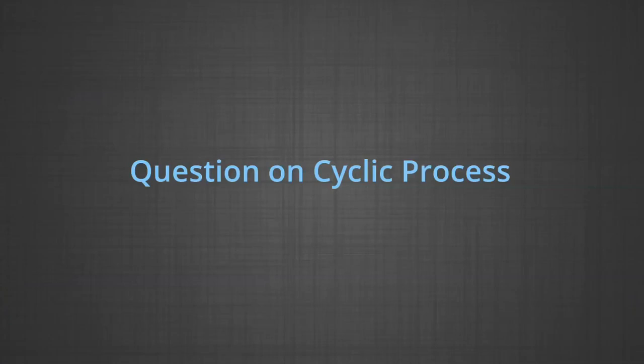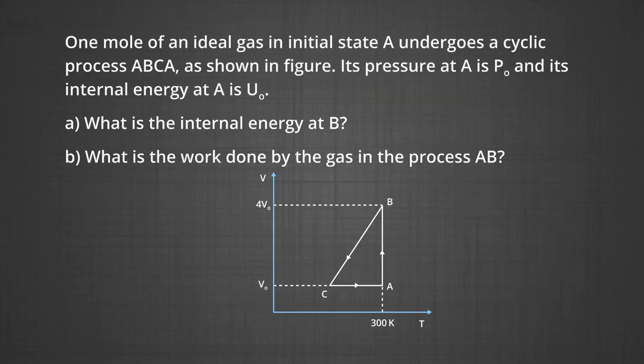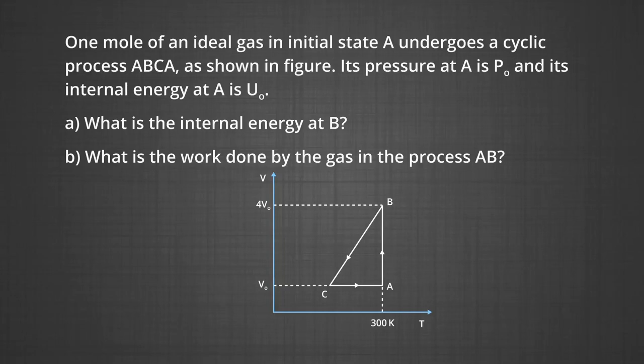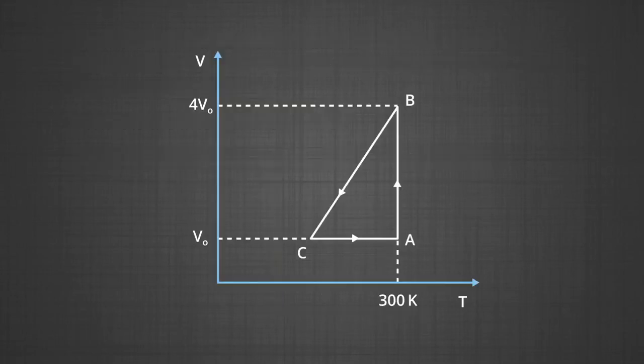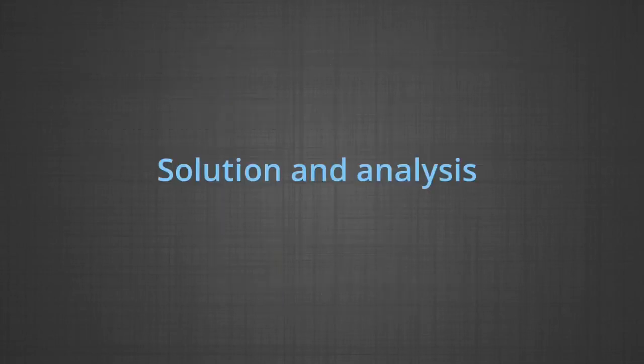The next question is based on cyclic process. One mole of an ideal gas in initial state A undergoes a cyclic process A→B→C→A as shown in the figure. Its pressure at A is P₀ and its internal energy at A is U₀. What is the internal energy at B, and what is the work done by the gas in process AB?